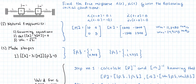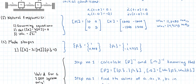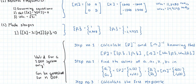Hi everyone. Today we're going to continue with our example — we're asked to find the free response for both of the masses given the following initial conditions. In the two previous videos we found the natural frequencies. In doing so we started by finding the governing equations, found the eigenvalues, and the square root of the eigenvalues gave us the natural frequencies. We also found the matrix of masses and the stiffness matrix. In a following video we calculated the mode shapes by solving the eigenvalue problem, finding the first and second mode shapes. Since we have two degrees of freedom, we also have two mode shapes.